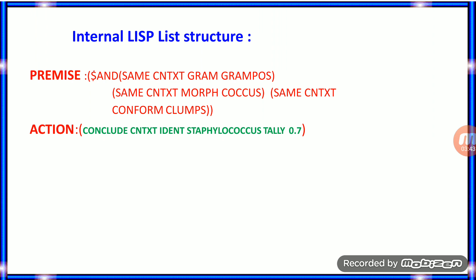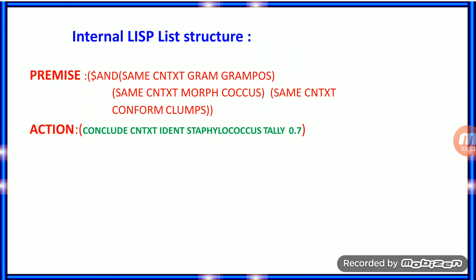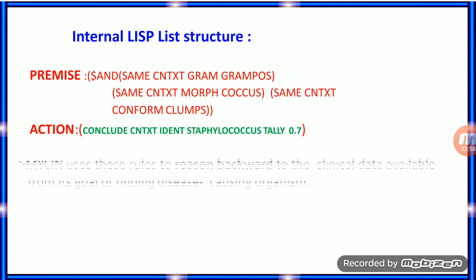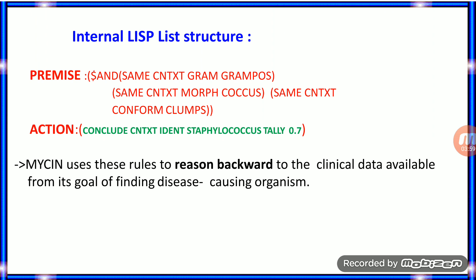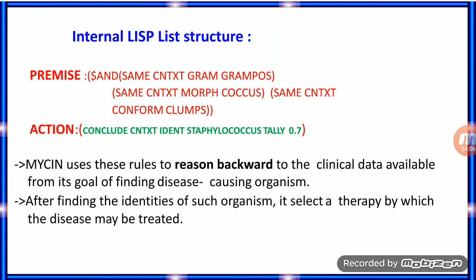For the same example seen on the previous slide, the context is gram-positive, morphology is coccus, and growth confirmation is clumps. The bacterial infection identified is Staphylococcus with CF supporting value of 0.7. Mycin uses backward reasoning from the clinical data available, working toward its goal of finding the disease organism and selecting appropriate therapy.